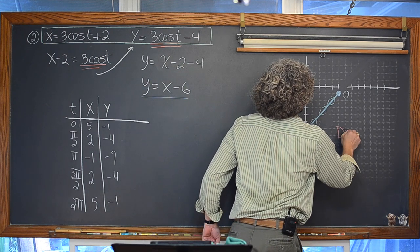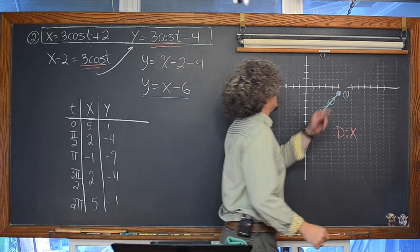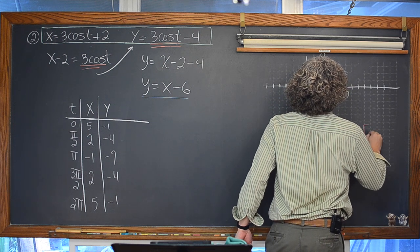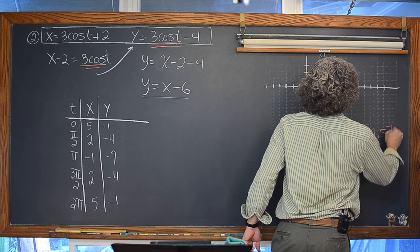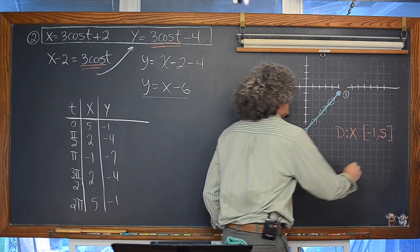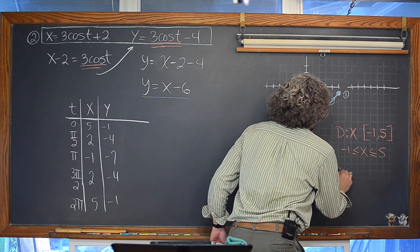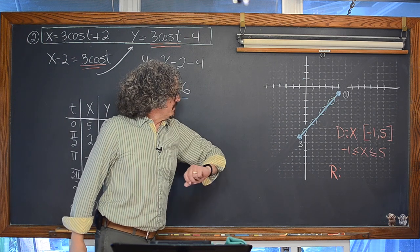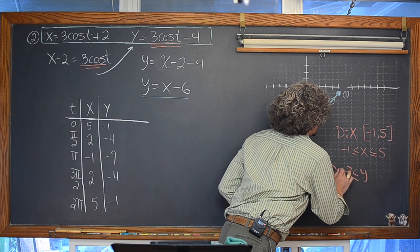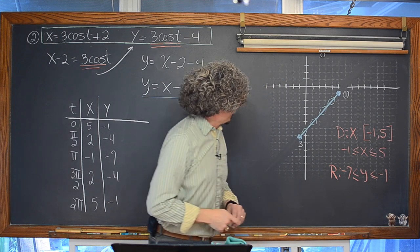Our domain for this parametric system is [−1, 5] — that is, x is greater than or equal to negative 1 and less than or equal to 5. Our range values: the smallest y included is negative 7 and the largest y included is negative 1, so the range is [−7, −1].